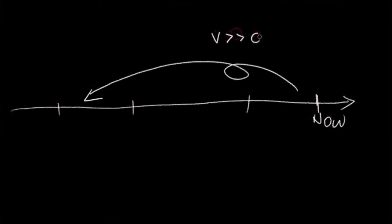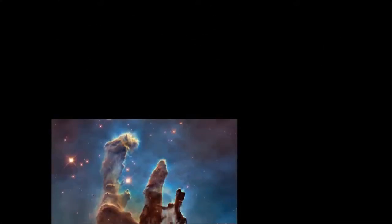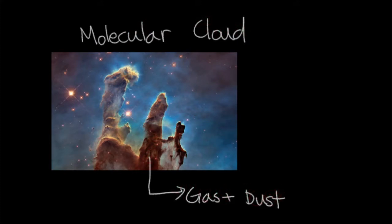To find out, we must first go back to the formation of the solar system, to a time even before our sun was born. This is a molecular cloud, a cold and dense collection of gas and dust floating in space. It is a birthplace for stars such as our sun.